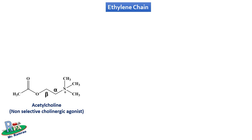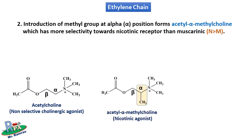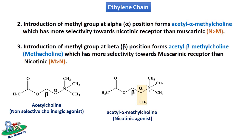The cholinergic system has two important receptors: nicotinic and muscarinic. Acetylcholine is a non-selective cholinergic agonist with both nicotinic and muscarinic actions. Introduction of a methyl group at the alpha position forms acetyl alpha-methylcholine, which has more selectivity towards the nicotinic receptor. Introduction of a methyl group at the beta position forms acetyl beta-methylcholine — methacholine — which has more selectivity towards the muscarinic receptor.